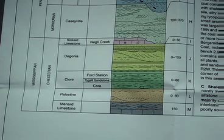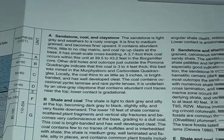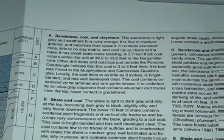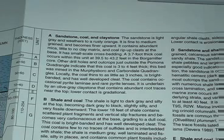We have our unit descriptions — A is the top 20 feet, sandstone, coal, and claystone — and we describe the lithology of all the rocks in the area. The cross-section is on the second page of the map.